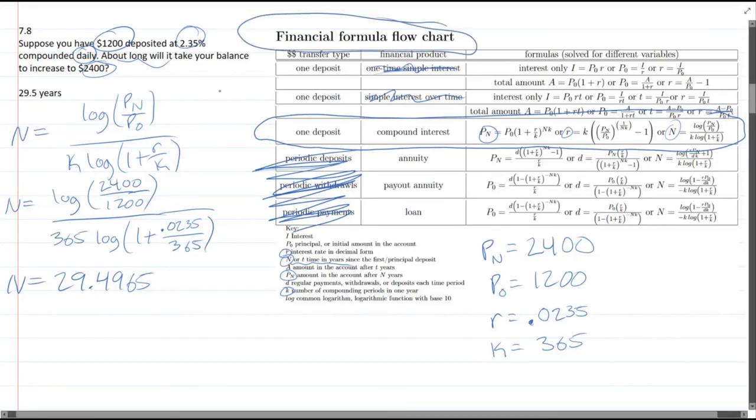Again, this financial formula flow chart is in chapter seven. Just look for it there. It's super super necessary for all of these questions.